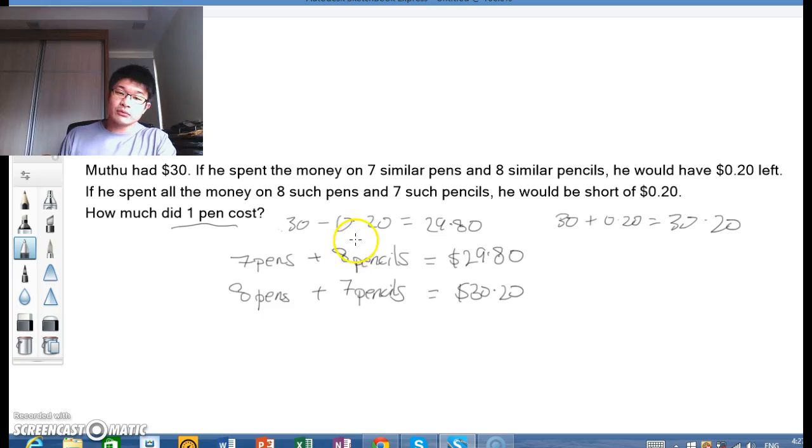So to do that, we multiply 7 here, we multiply 8 here, make them both 56. And when we do that, we do that across for all the numbers here to be fair to everybody.